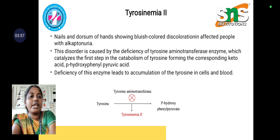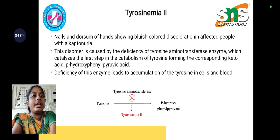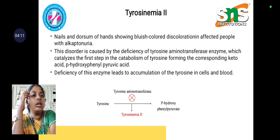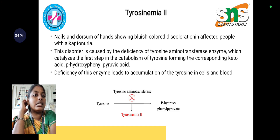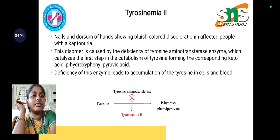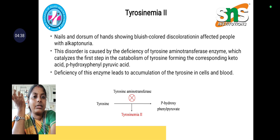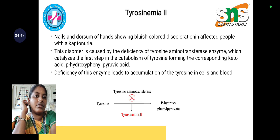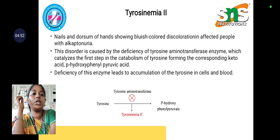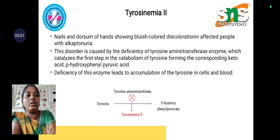Coming to Tyrosinemia Type 2, it mainly involves the nails and hands, showing bluish color discoloration in affected people with alkaptonuria. This disorder is caused by deficiency of the tyrosine aminotransferase enzyme, which catalyzes the first step in tyrosine catabolism — forming the ketoacid parahydroxyphenylpyruvate acid. When tyrosine aminotransferase is deficient or defective, tyrosine cannot be converted into parahydroxyphenylpyruvate and accumulates in blood, leading to tyrosinemia.